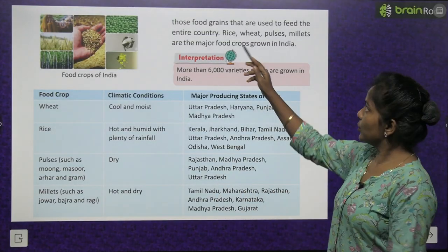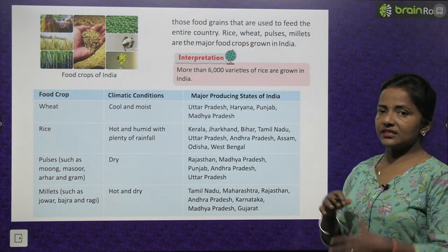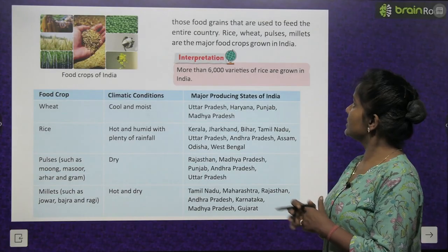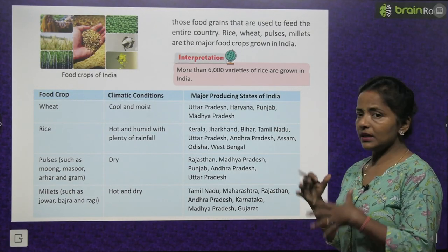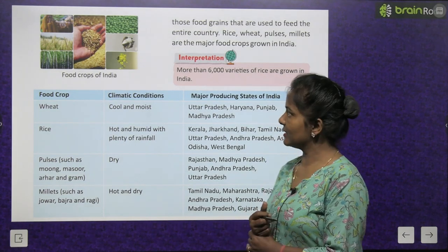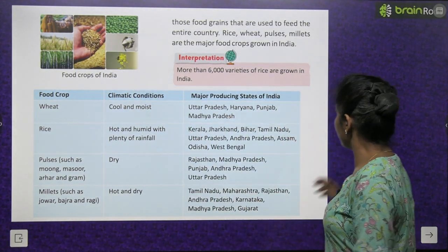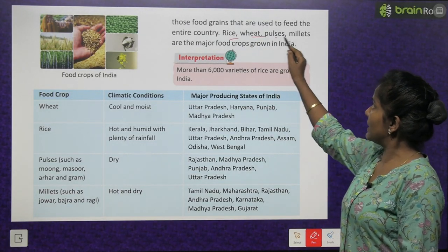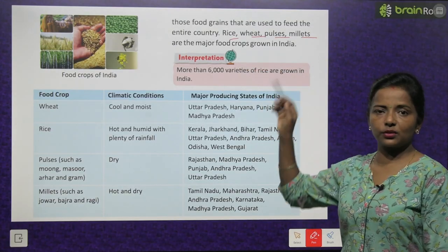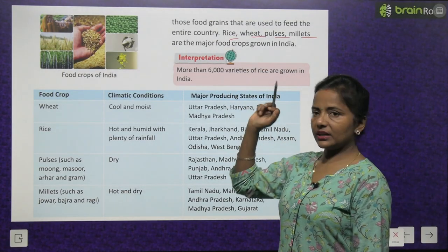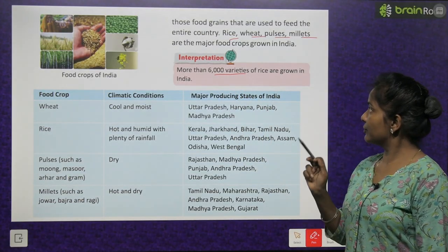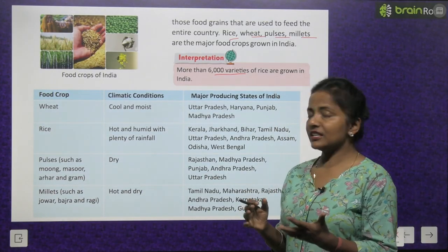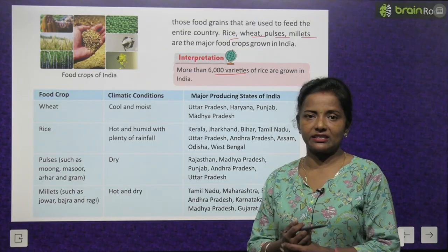Food crops include all those food grains used to feed the entire country. Rice, wheat, pulses and millets are the major food crops grown in India. More than 6,000 varieties of rice are grown in India.